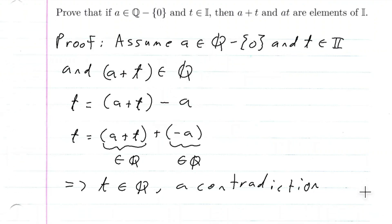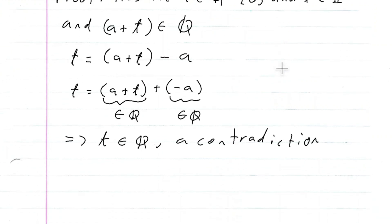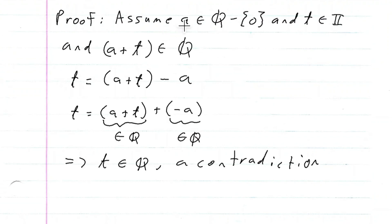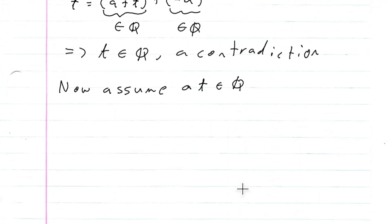Now we're going to do the other one — the product. We're going to keep the assumptions that A is rational and not zero, and T is irrational. But we're also going to assume that A times T is rational.